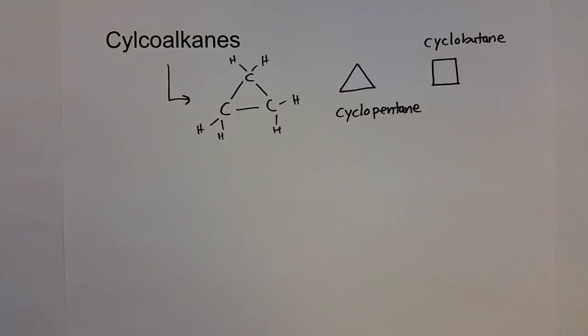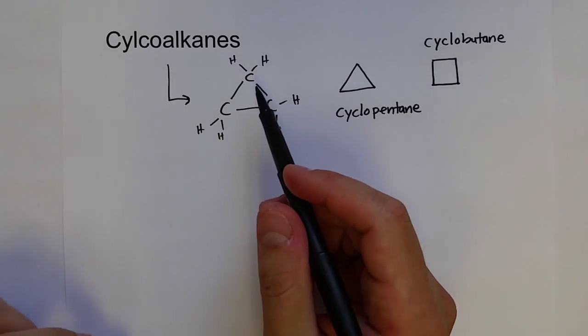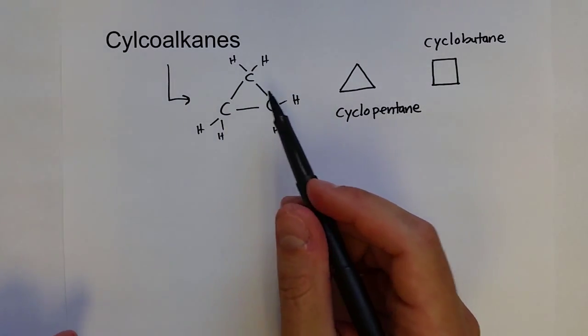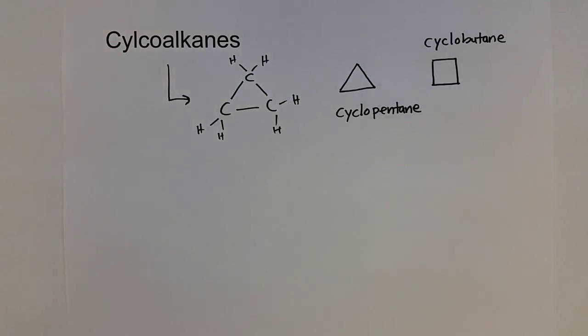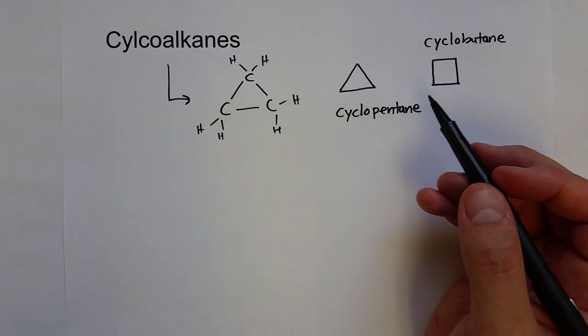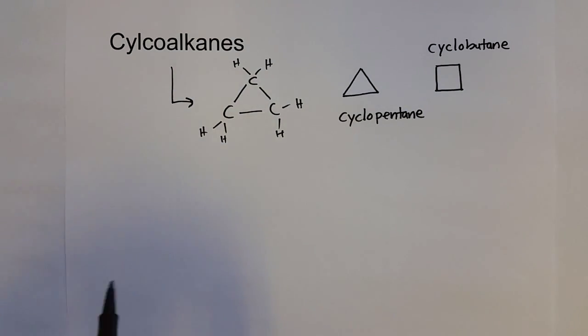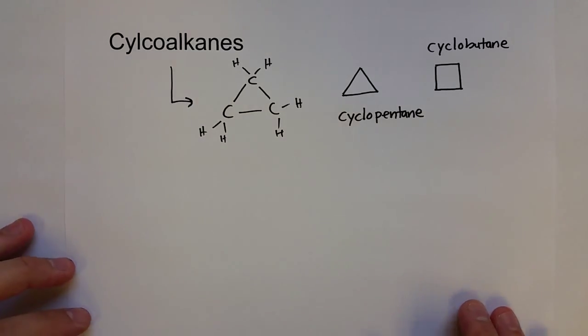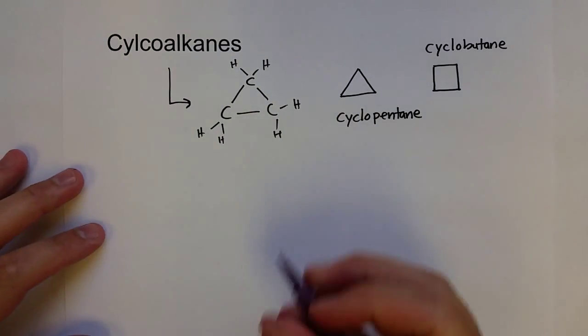And it turns out that when carbons are pushed together like this, they actually create a little bit of instability. So cyclopentane and cyclobutane are really reactive, and you don't see those very often. But once you get past the four carbons, they become much more stable, and you see them pop up in terms of organic chemistry and even biological chemistry, biological molecules.